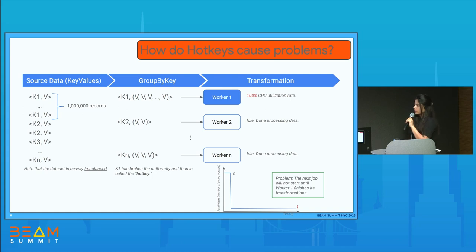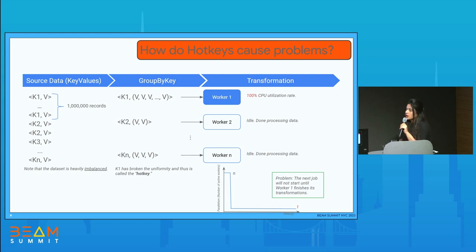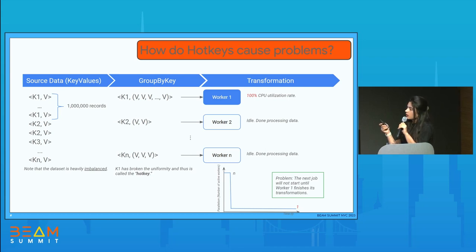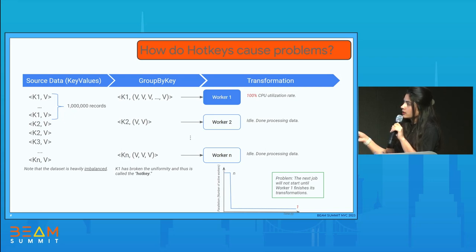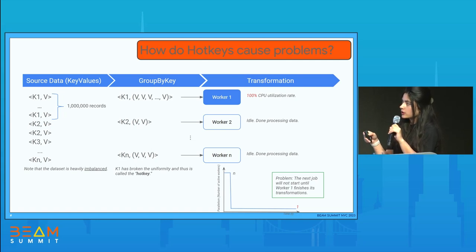Here's an example of key-value pairs in a PCollection where almost one million records are associated with key one — same key, different values — making it heavily imbalanced. Three workers handle different keys, but worker one is heavily overutilized handling key one's key-value pairs, with CPU utilization skyrocketing while the other two workers sit idle. The problem is that in multi-stage pipelines, the next job won't start until this one finishes, so you have to wait for worker one to complete.